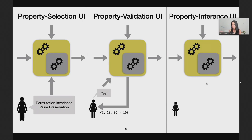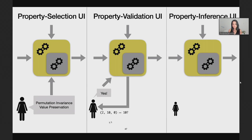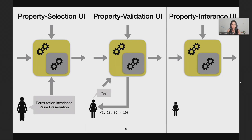The third and coolest UI is the property inference UI, where we only expect the user to provide input-output examples, and we are able to fully automatically infer the set of applicable properties. This looks just like the standard setting for example-based inductive program synthesis. There is an outer box and an inner box because the design of the outer box always uses an existing inductive synthesizer as a black box and builds on top of it — the gray inner box is an existing inductive synthesizer used as a black box.